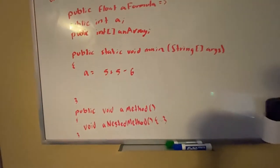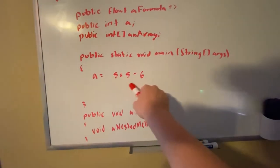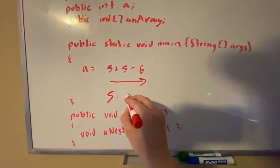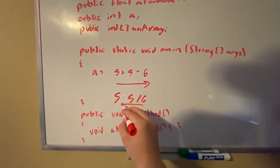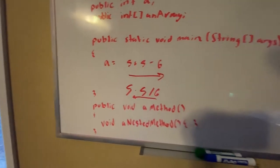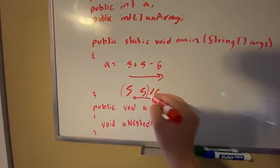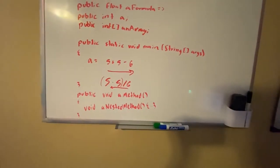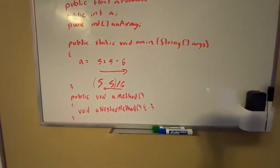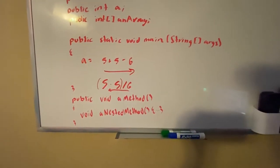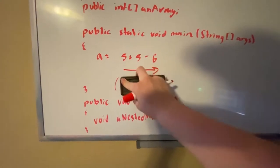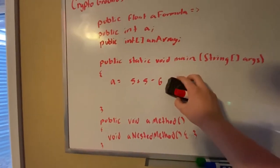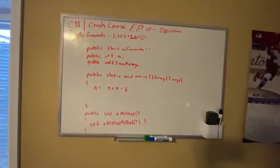Something to be aware of with these is the order of operations — it's a bit different from standard math. With plus and minus it goes left to right, while with multiply and divide it goes right to left. That's why sometimes you might have to use parentheses. Visual Studio Community will tell you if parentheses are useless or redundant. I still get confused with order of operations so I always use tons of parentheses.